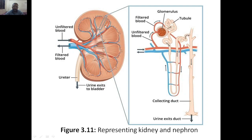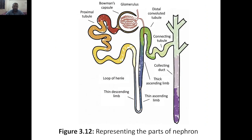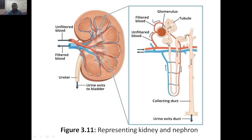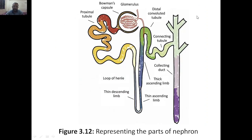So one nephron is explained here. There are 1 million nephrons in total. Now, the representation of the different parts of the nephron — whatever was just explained, now we look at the exact parts. We can start with the proximal tubule, where the glomerulus is — where the blood enters and is purified — and the waste is given to the connecting tubule. The filtered blood goes to the thick ascending limb, then thin ascending limb, then thin descending limb, and then the loop handle.